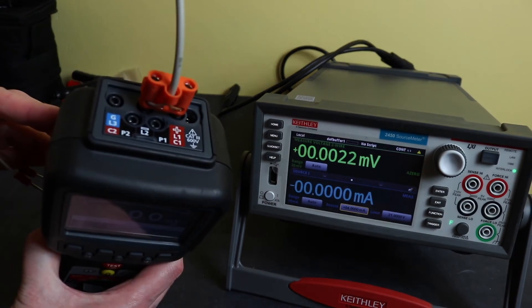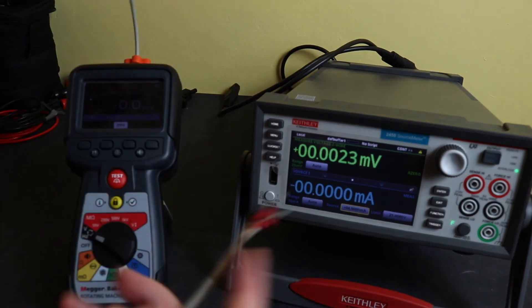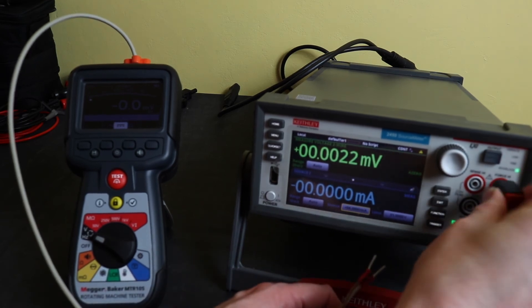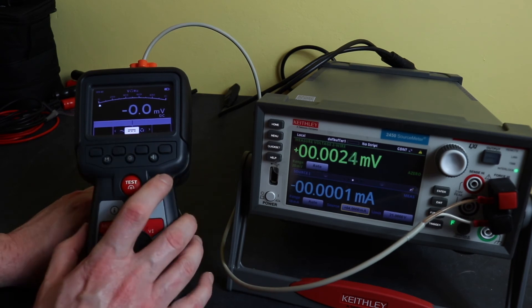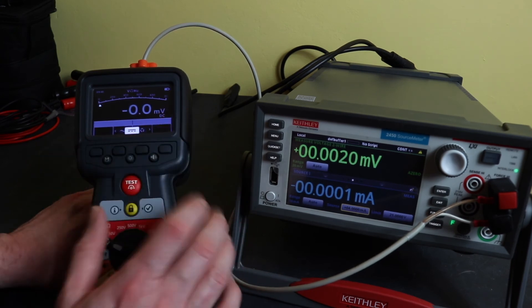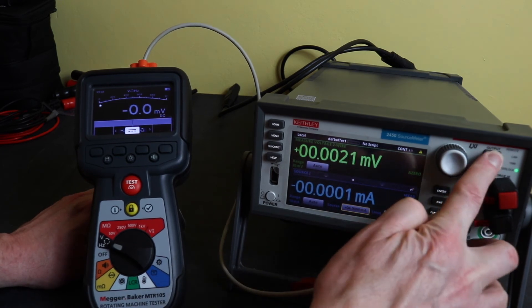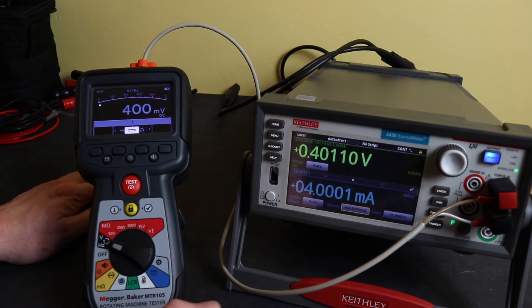So that's the Pomona jack there plugged into the top and so just use a couple of adapters to get into this. Okay so we're set to DC volts, I've got no range control on this instrument, it's auto ranging.